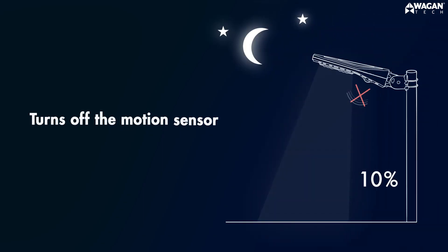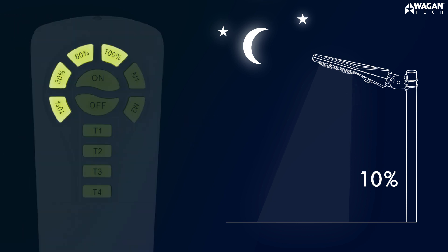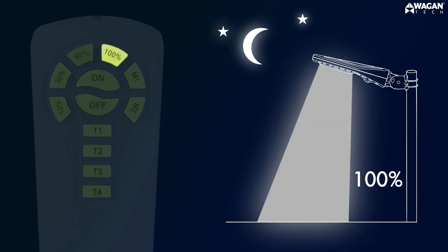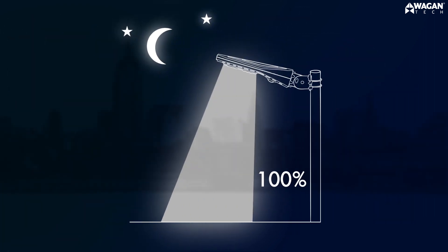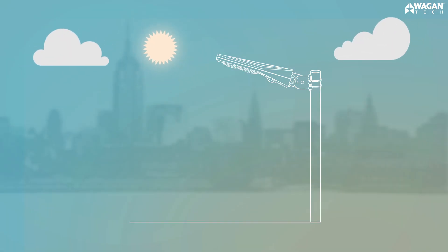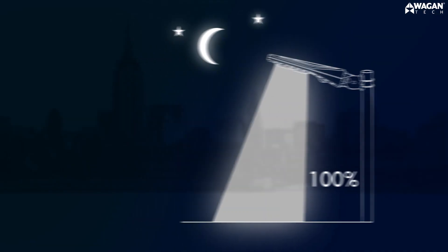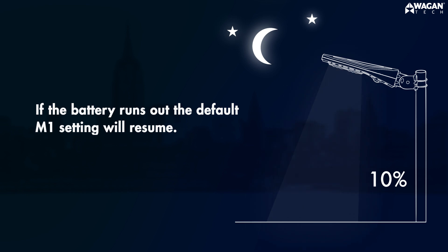Brightness override mode turns off the motion sensor to provide a constant brightness throughout the night. To use it, press any one of the four brightness control buttons. You can choose between ten percent, thirty percent, sixty percent, or a hundred percent. The light will then remain constantly on at the selected brightness level until dawn. Once it gets dark again, the light will resume the previous night's settings unless the battery runs out. Then the default M1 setting will resume.